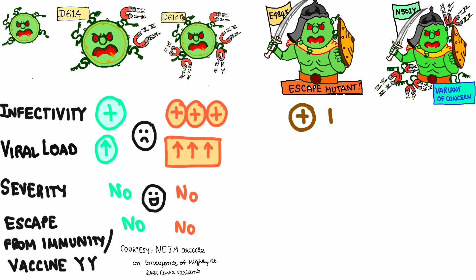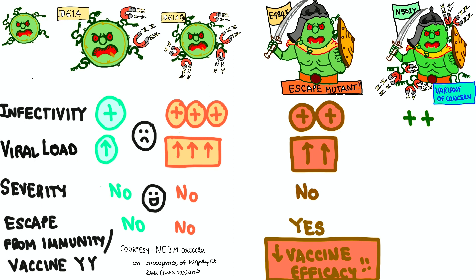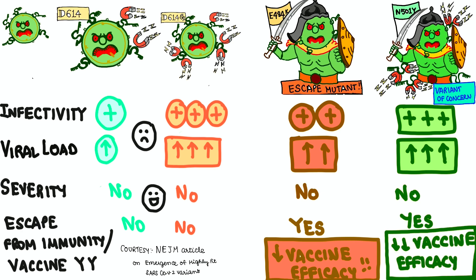The clever escape mutant has increased infectivity but doesn't cause much severe disease. The main drawback is it can escape vaccine immunity, decreasing vaccine efficacy. The same applies to the next variant of concern, N501Y, which also has elevated infectivity and decreased vaccine efficacy. These are the variants of concern.